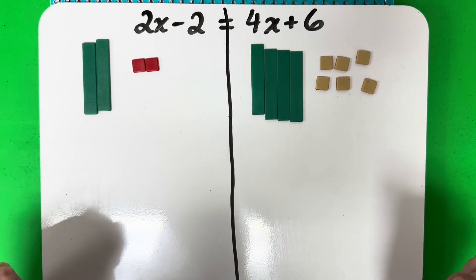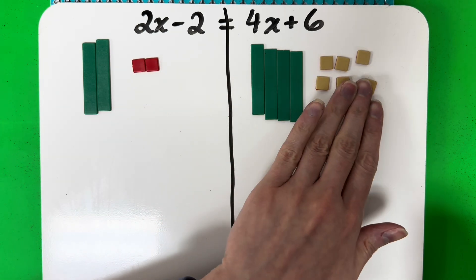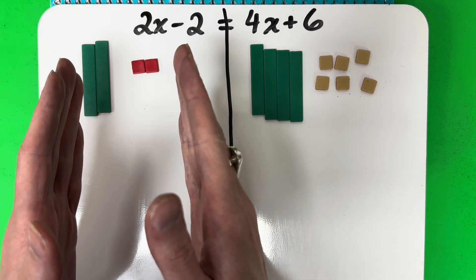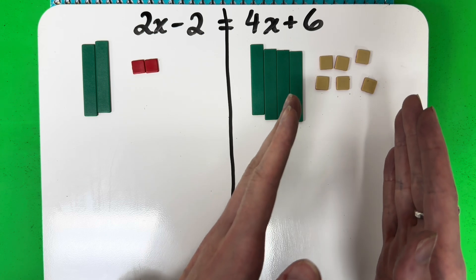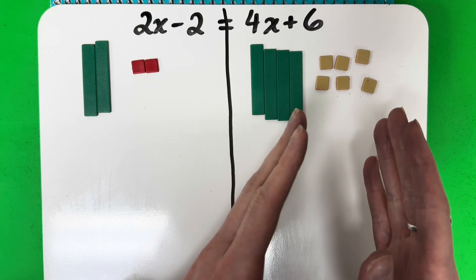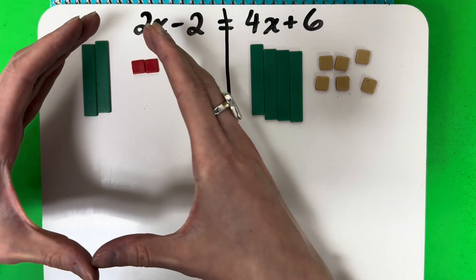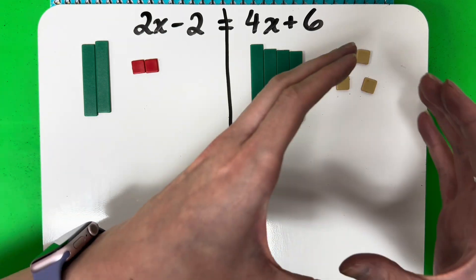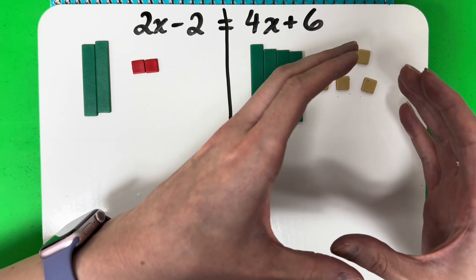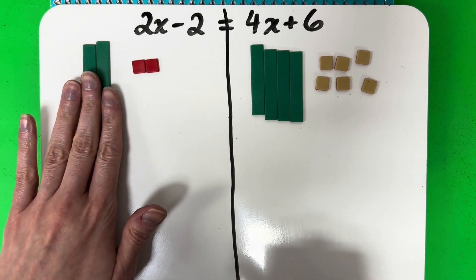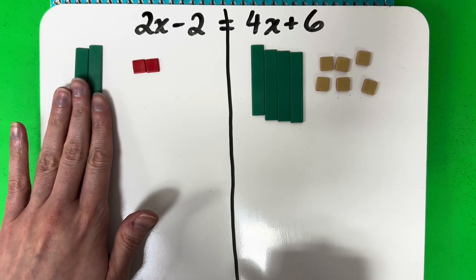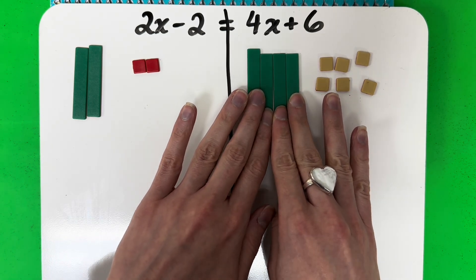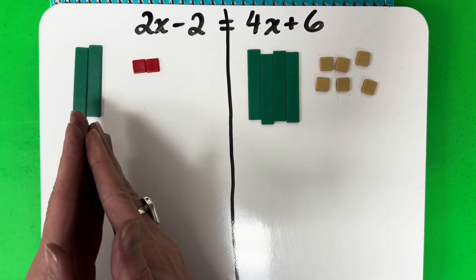So now I've got that modeled: 2x minus 2 equals 4x plus 6. My goal is I want all of the rectangles on one side and all of my small squares on the other side. For consistency, I'm always going to move my rectangles to the left side and my little squares to the right side. I like that these two rectangles are on the left, but I don't like that my four rectangles are on the right, so let's go ahead and move them to the left side.